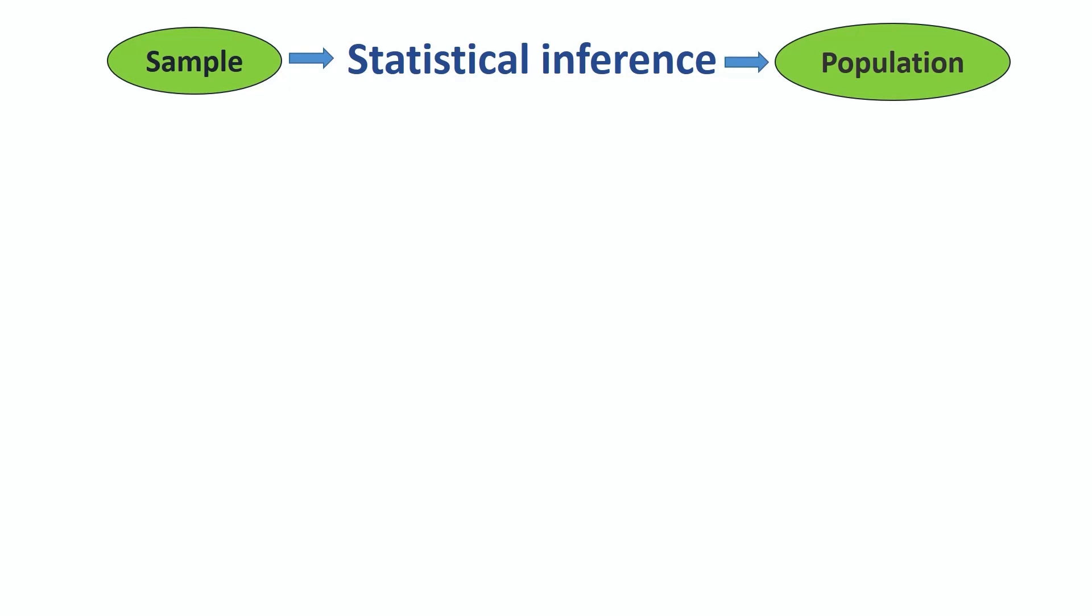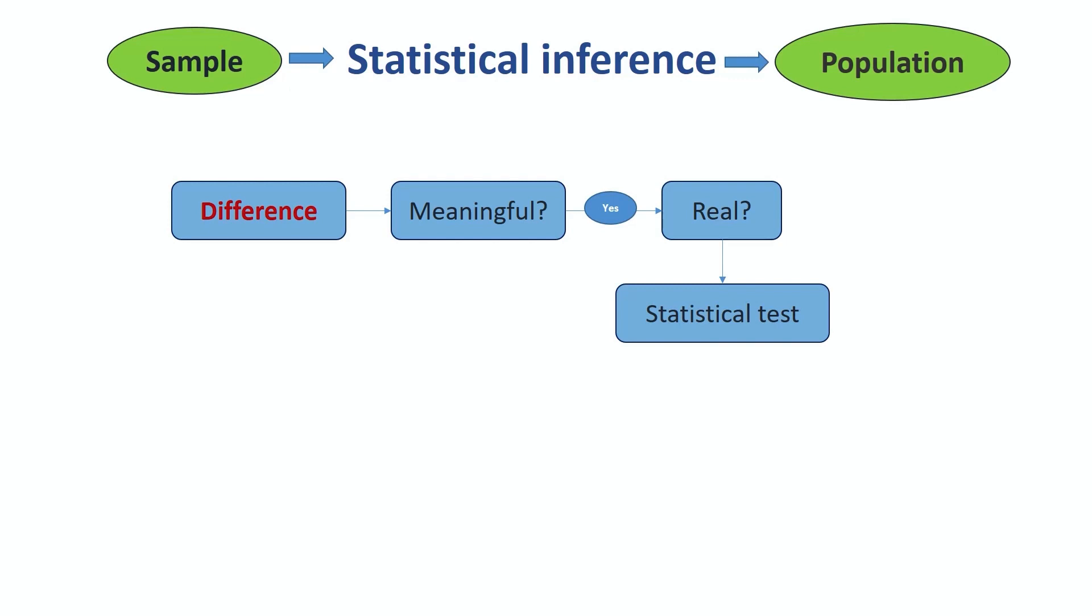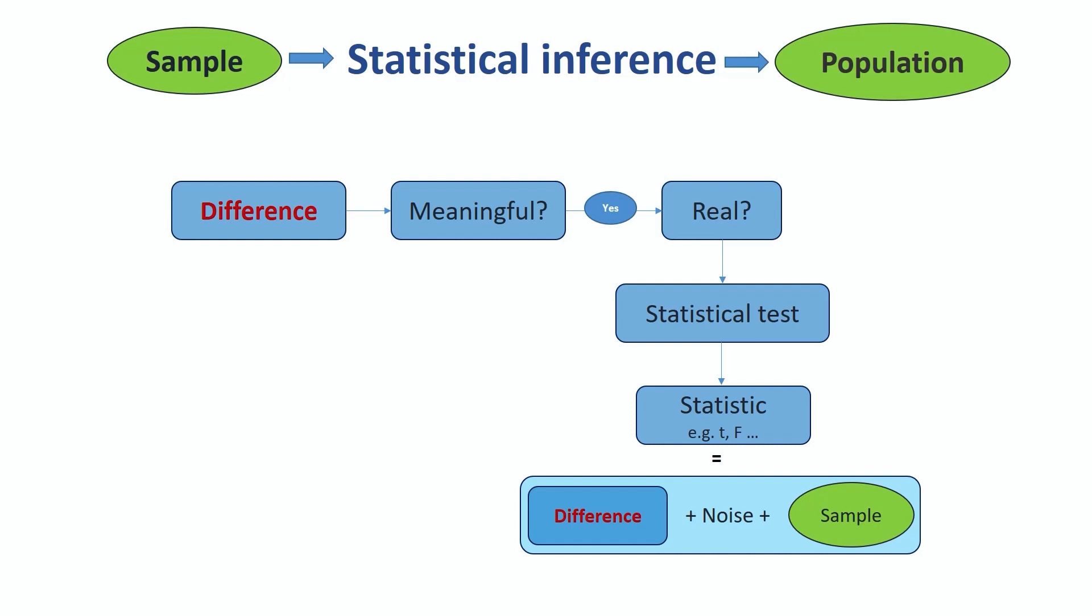Second, we should be led by the biology or the scientific question in a wider sense. So we run an experiment or make an observation and say we see a difference. The first question should be, is it meaningful, as in exciting enough that it is worth exploring further? If the answer is yes, then we want to know if it is real, as in if it is likely to be true in general. For that, we use a statistical test. Most statistical tests produce a statistic value, like the t-value for the t-test, which is the combination of the actual difference, the noise, so the variability in the data, and the sample size, on which we base the confidence we have in what we see.